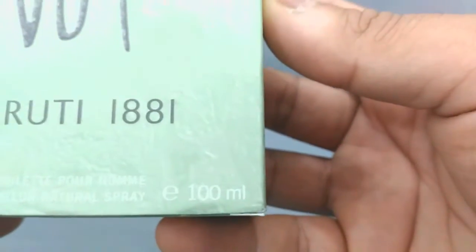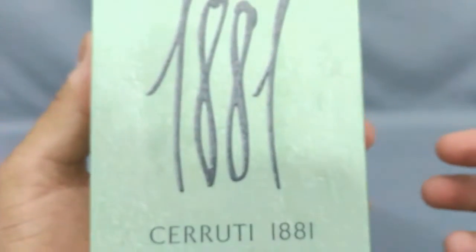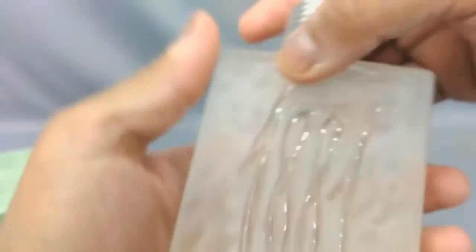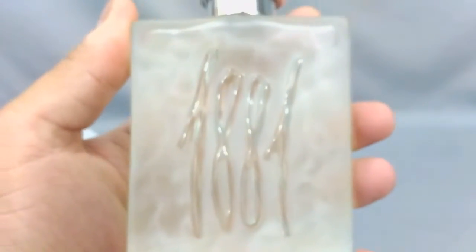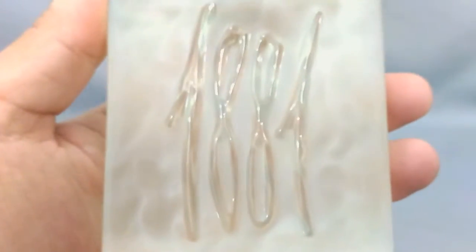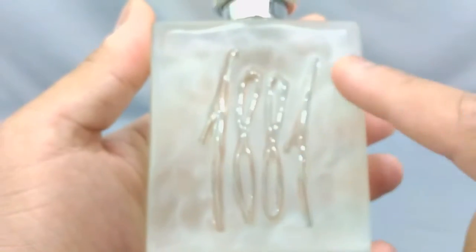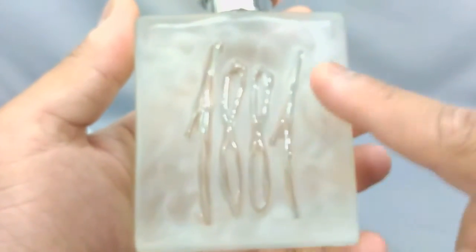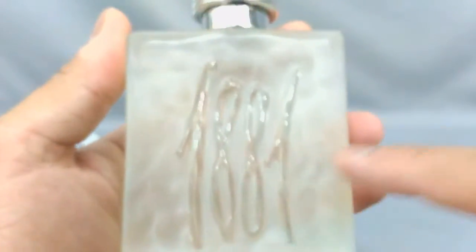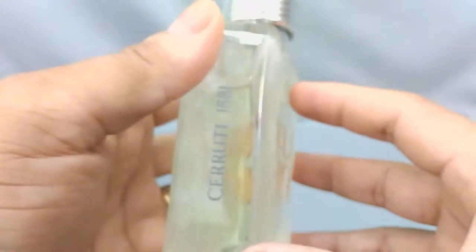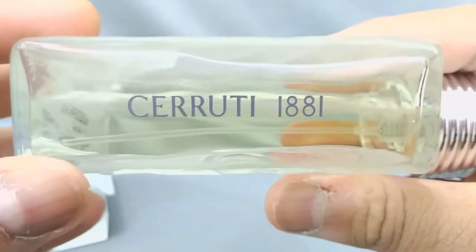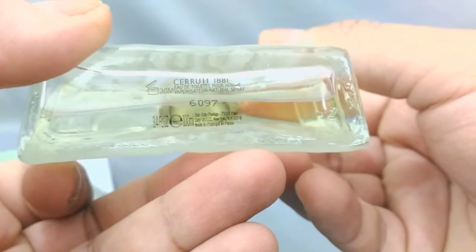There you go, 100 mil Cerruti 1881. Wow, that is an amazing looking bottle. You got 1881 glazed, that's a glazed bottle, it's not really smooth and etched over there, 1881, and right there in the corner Cerruti 1881.